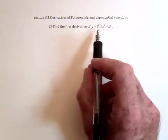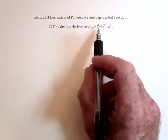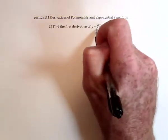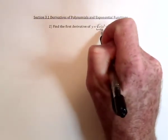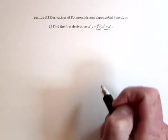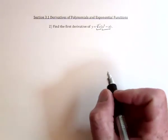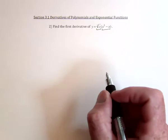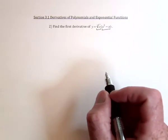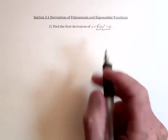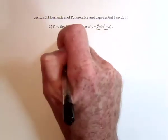With this one, we've got the product of two functions. We've got this cube root function and then this x squared minus x function. We haven't covered the product rule yet, so we can't really deal with products at this point. In a few more sections, we can. With this one, we can't yet, so we're going to have to do some algebra to simplify this one.